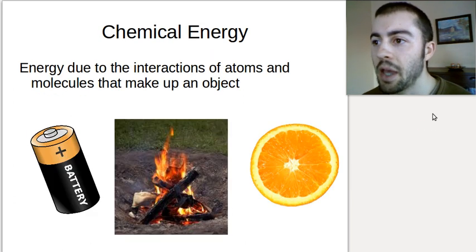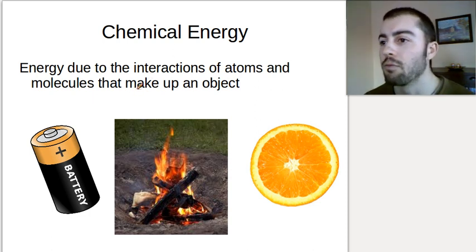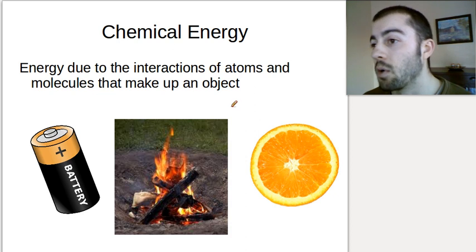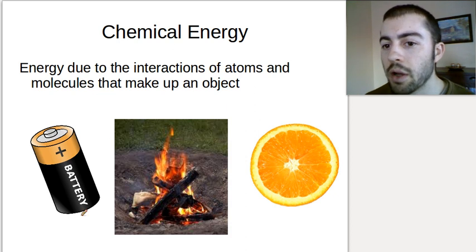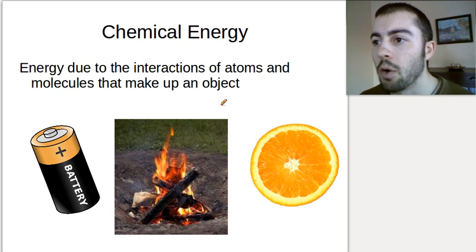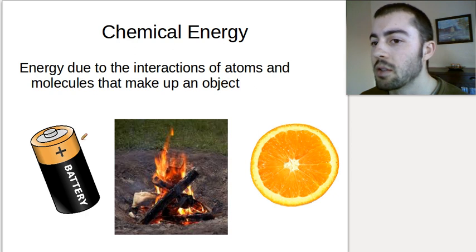Thermal energy is one type. Chemical energy is another type. Chemical energy is energy due to the reactions or interactions of atoms and molecules inside an object. Basically, any chemical reaction that takes place gives off or uses chemical energy. One example is a battery. Batteries have different chemicals inside — the battery that powers your phone and laptop is most likely a lithium battery. There are also alkaline batteries, like a Duracell, and nickel batteries. They all run off chemical energy.